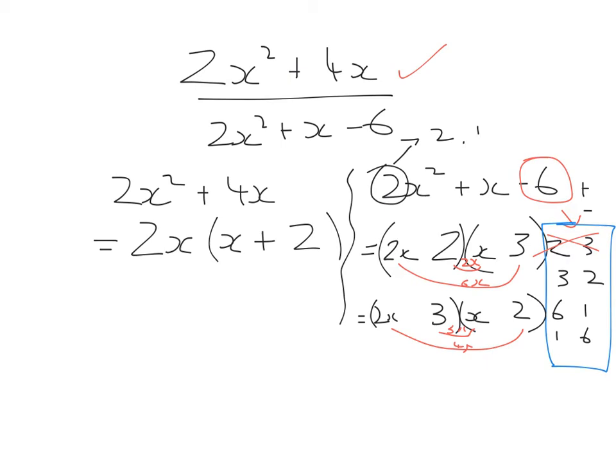Then we say to ourselves, is there any way by plussing and minusing they can add together to give me plus 1x? They definitely can. And that will work if the 4x is a plus and the 3x is a minus. So we have to put a minus beside the 3 and a plus beside the 2. So now the bottom of our fraction is done.